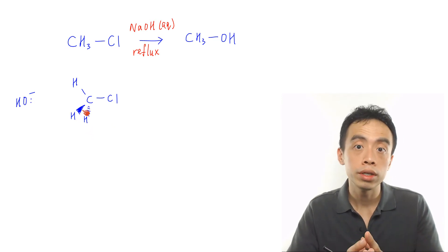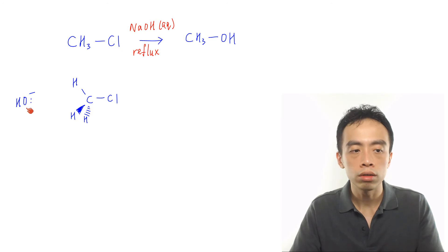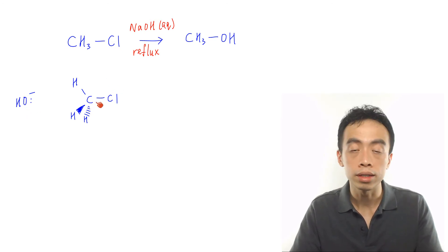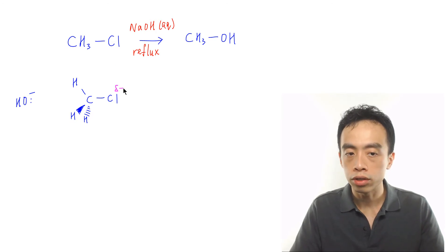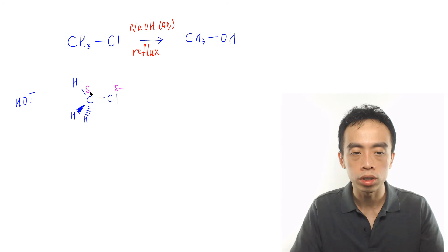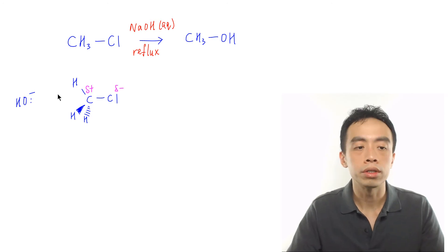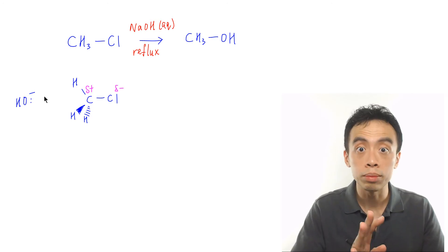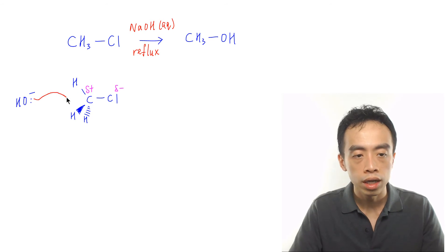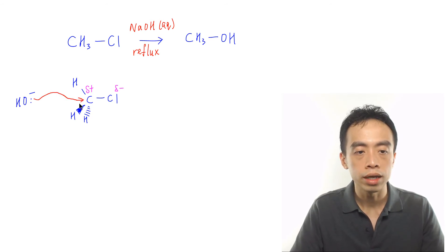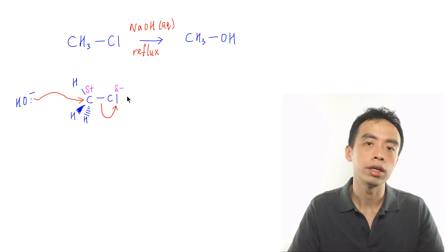We draw the OH⁻ first, then the haloalkane — showing the C–Cl bond and the rest of the C–H bonds in 3D orientation. One C–H bond is on the plane, one is closer toward you shown with a solid wedge, and one is pointing away shown with a dashed wedge. What happens is the nucleophile attacks the carbon from directly behind the C–X bond — a backside attack — and kicks out the chloride.